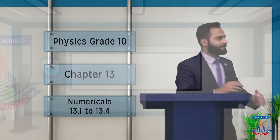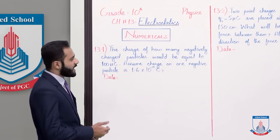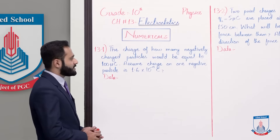Chapter number 13 electrostatics, numerical 13.1. The charge of how many negatively charged particles would be equal to 100 micro coulomb? Assume charge on one negative particle is 1.6 multiplied by 10 to the power minus 19 coulomb.